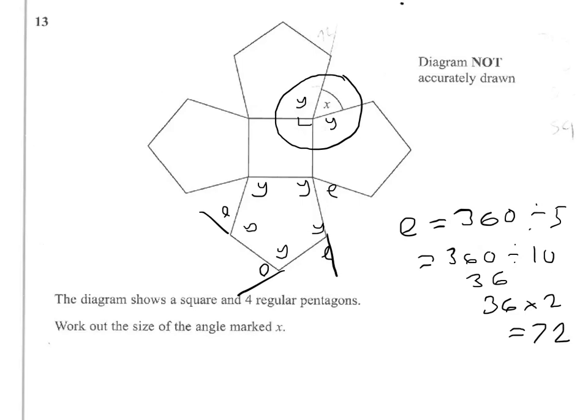Now, it's on the straight line with the internal angle, so Y will equal 108, because 108 and 72 make 180.